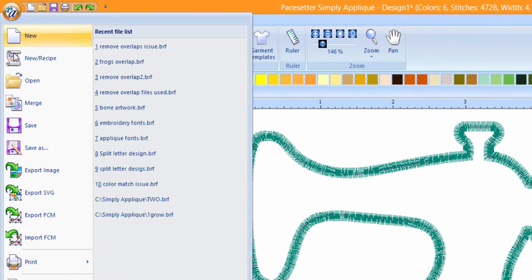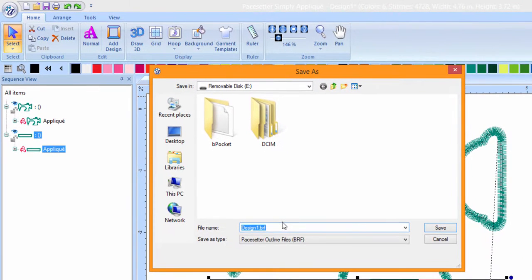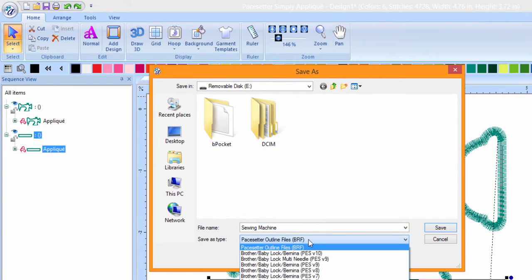Let's click Undo and get started again. Go to the File pull down menu and choose Save As. Name the design and save it in your machine format to a USB stick to take to your machine.